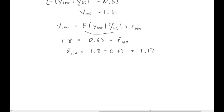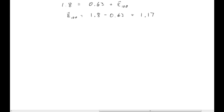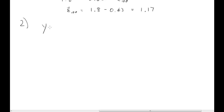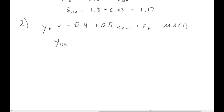The second question is about forecasting using an MA model. We have an MA model; I give you the estimated parameters. As this is an MA model, the estimation of these parameters is not as straightforward as in AR models. This is an MA model of order one. We are given some information: at time 134 the observation is -0.8, at 133 it's -1.1, and at 132 it's -1.4.